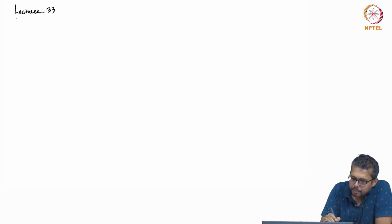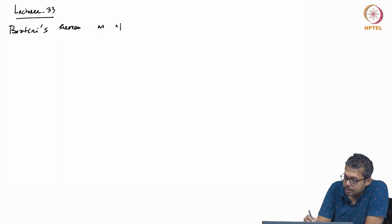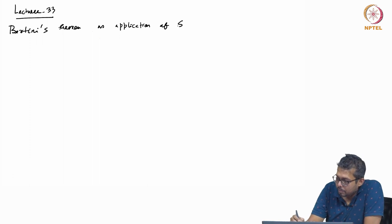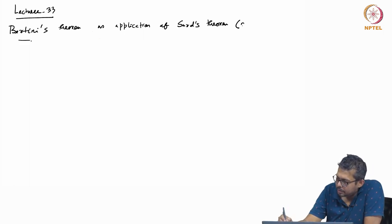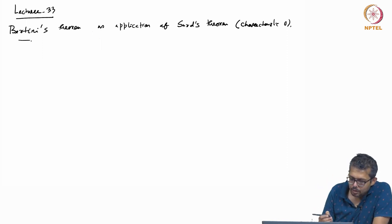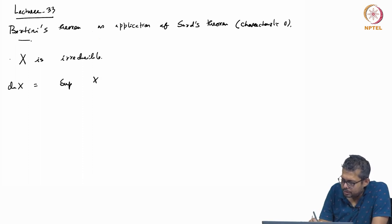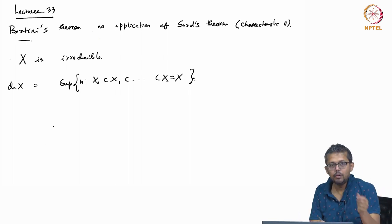I will talk about Bertini's theorem, mostly as an application of Schat'z theorem, of course in characteristic 0. Before that, let us recall that when X is irreducible, the way you define dimension of X is as the supremum of a chain, where the x_i's are irreducible in X.